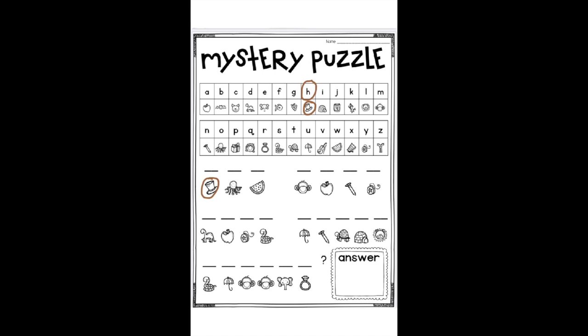So go ahead and write the lowercase letter H right in this spot. Remember, we always start at the top. We do big line down to the bottom. Oops, that didn't work. I made a little mistake. I'll have to try it again. I'll be flexible. You do big line down. Big line down, big line down, then up and over.